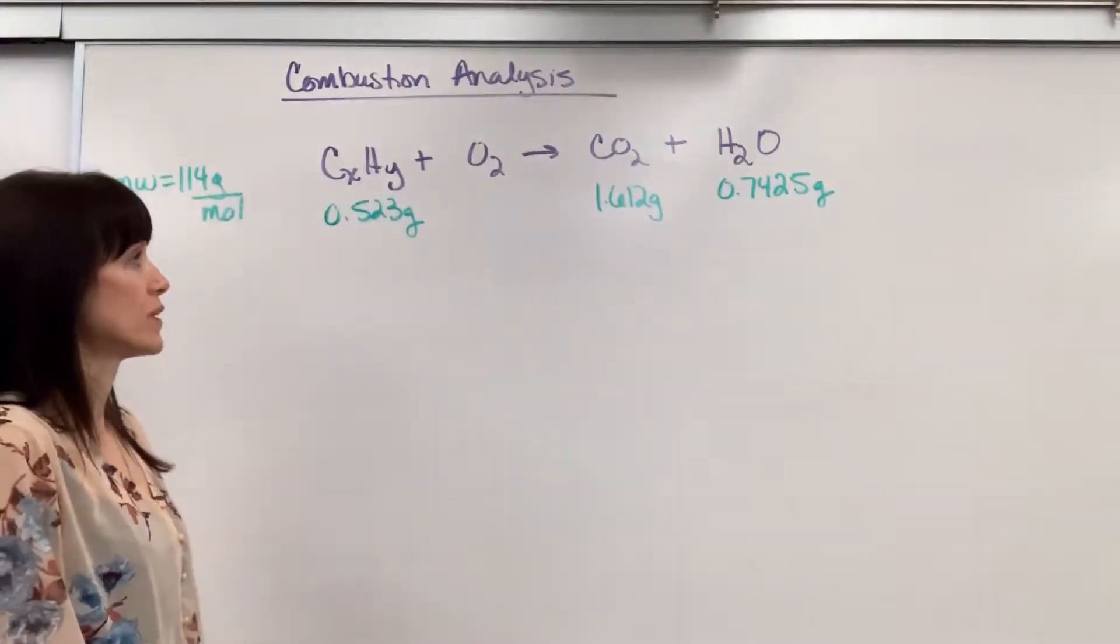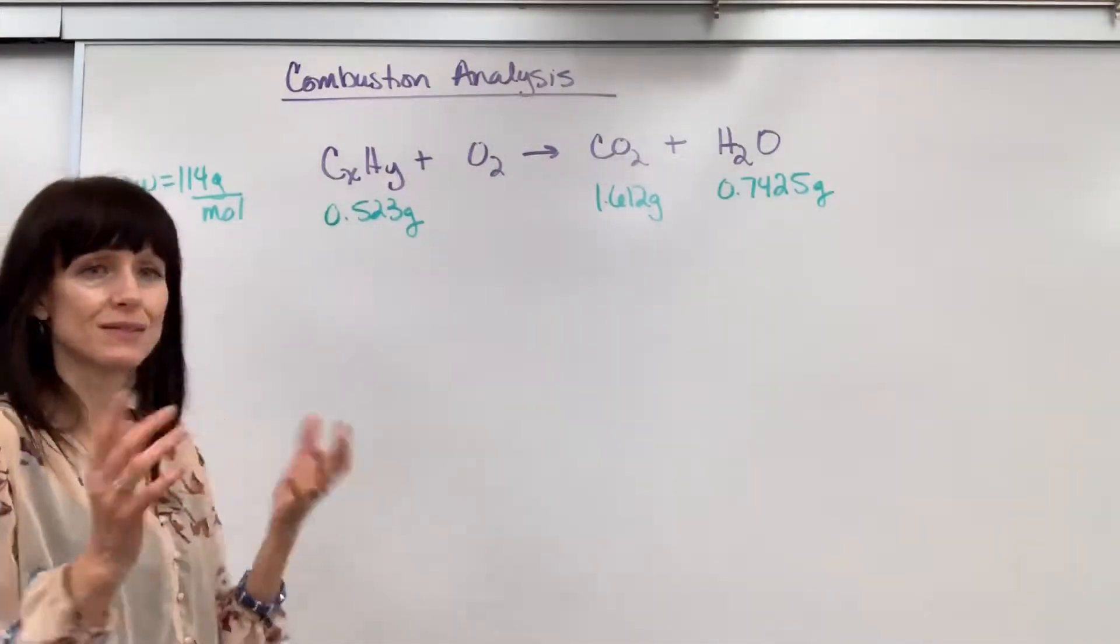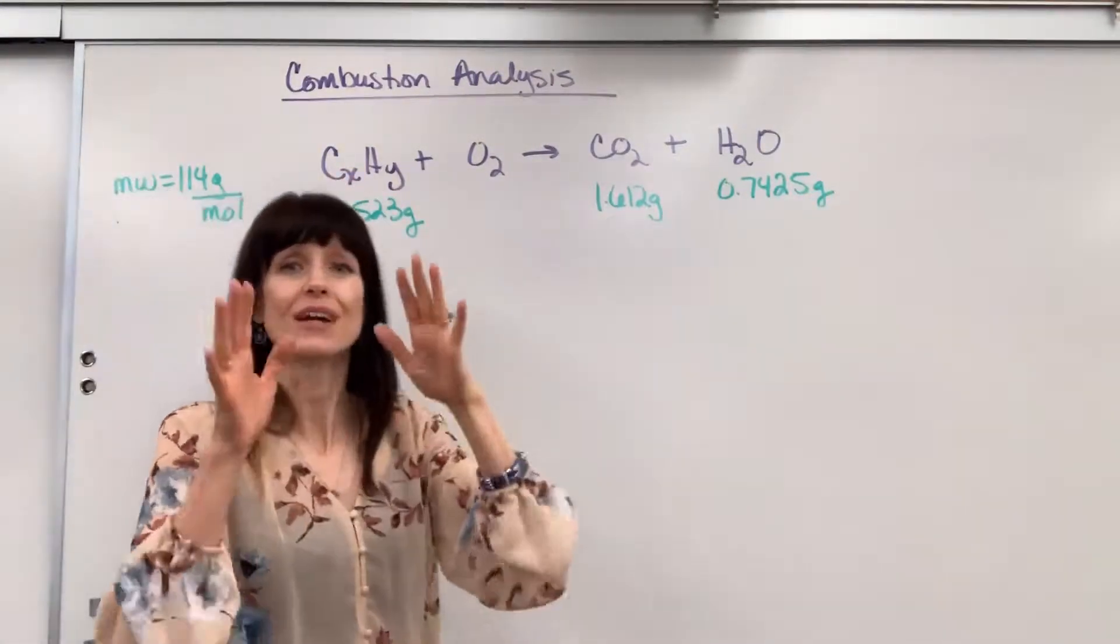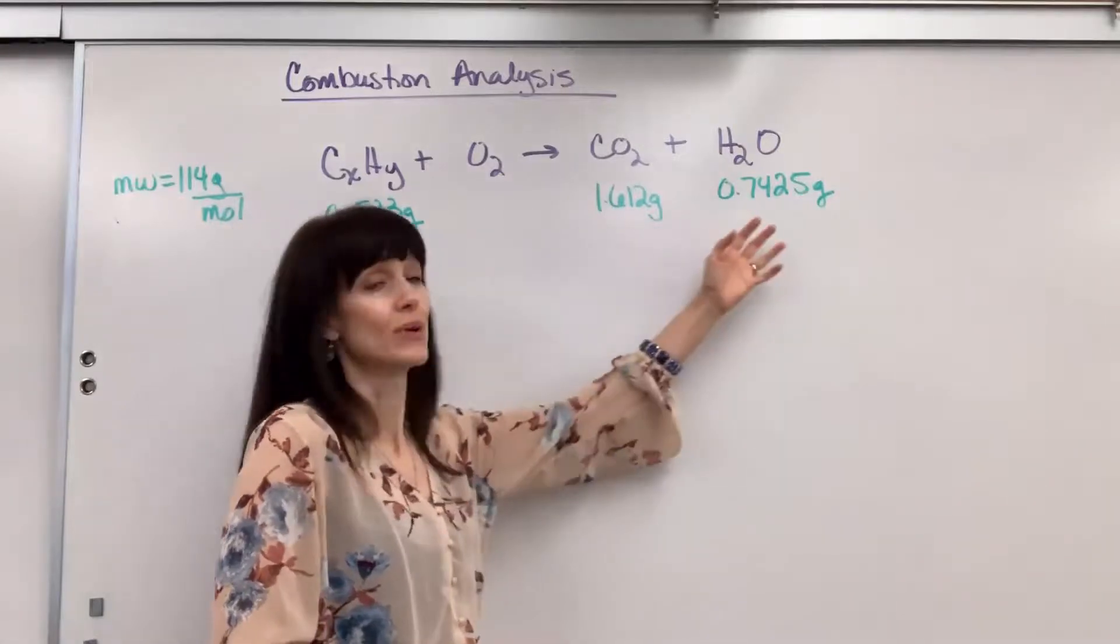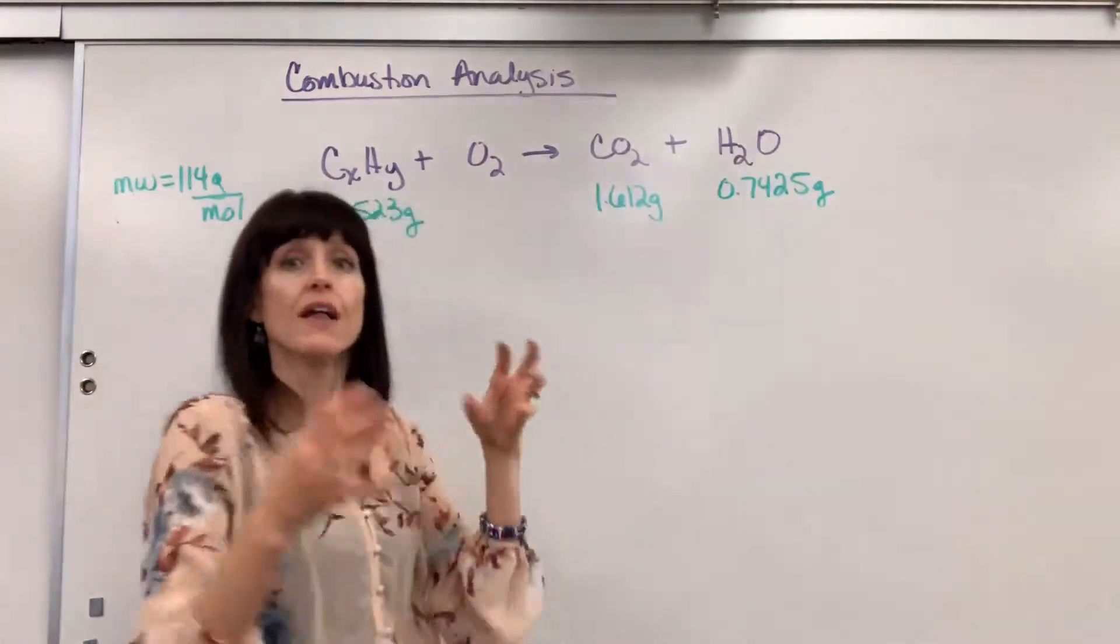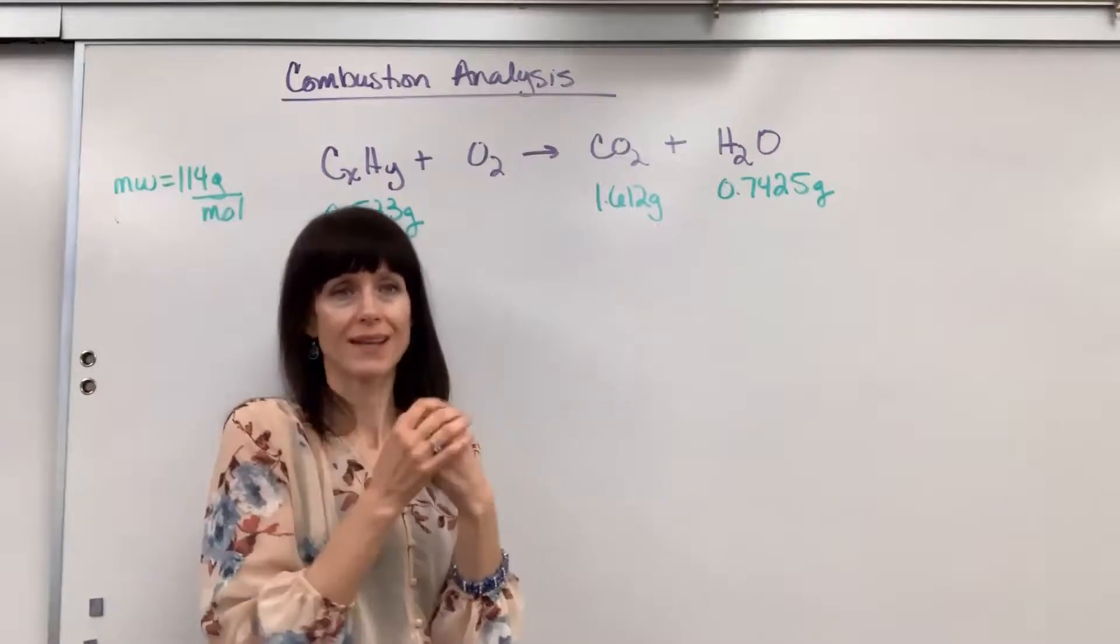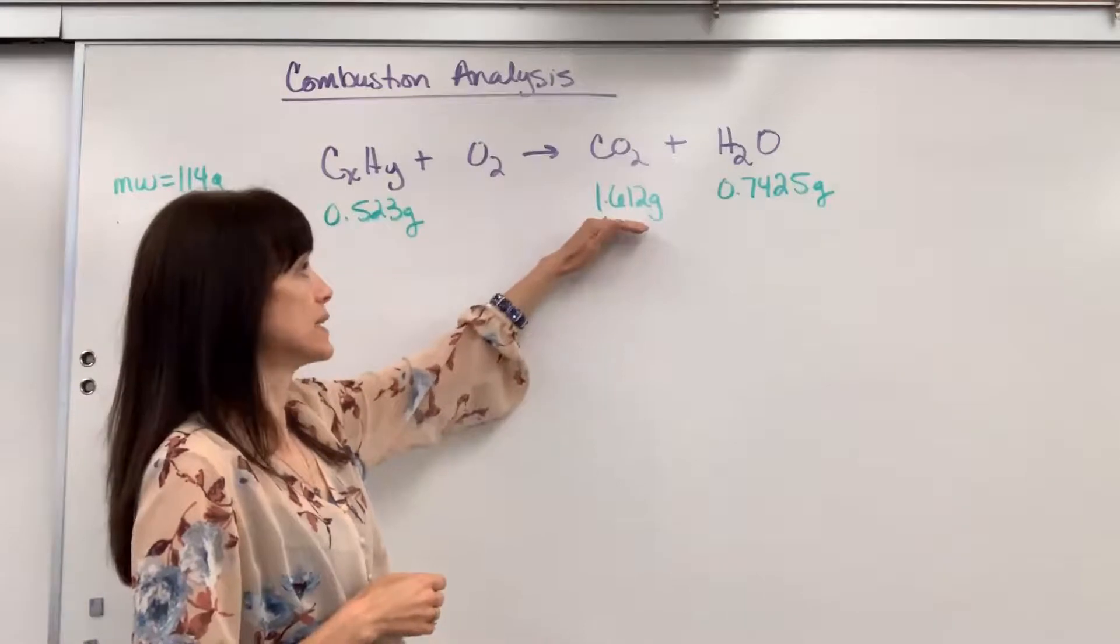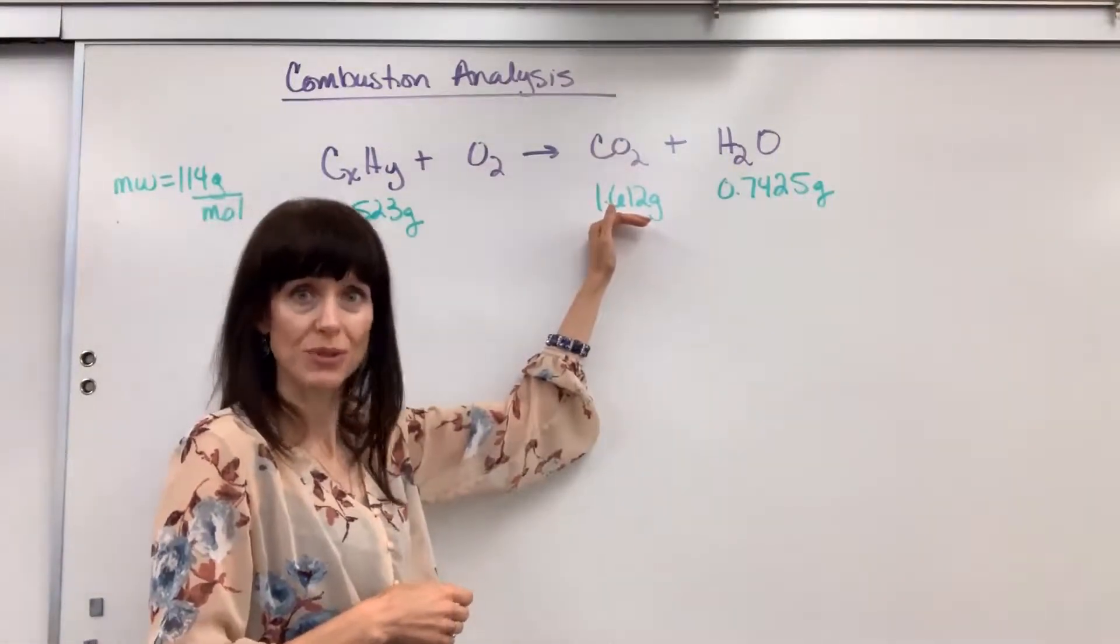So we can figure out the masses and the moles, because of molar mass conversions, of the carbon and hydrogen if we know the mass of the CO2 and H2O. Those two masses came from that trap where the CO2 is absorbed. Scientists did the math. They took the initial mass of the absorbent, final mass, and it had increased by 1.621 grams. So they knew that's how much CO2 was trapped.